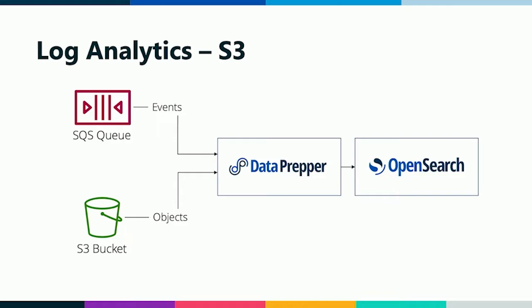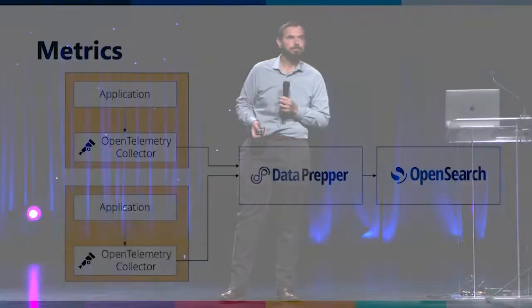Data Prepper also supports loading objects from Amazon S3. We support this for logs. If you have an S3 bucket, you can set up an SQS queue, and as new objects get written there, you'll get notifications in this queue, and Data Prepper pulls off of that queue. For every object that gets written, Data Prepper will pull from the bucket and parse it. Right now we support JSON arrays and new line delimited files, and we expect to have support for CSV in our upcoming version.